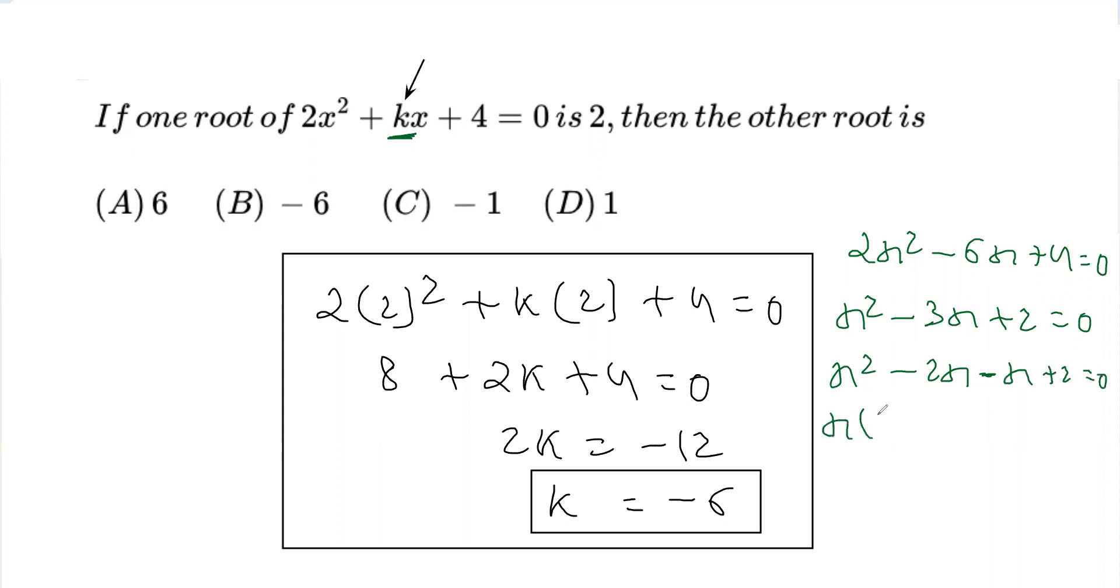Taking x common from the first two terms, we get x(x - 2). Taking -1 common from the last two terms, we get -1(x - 2). Finally, it's (x - 2)(x - 1) = 0.